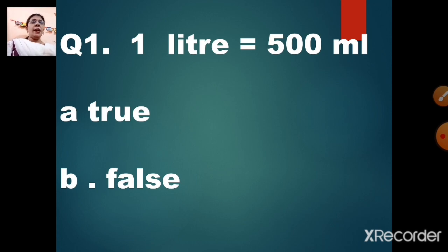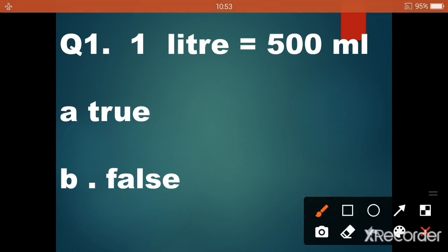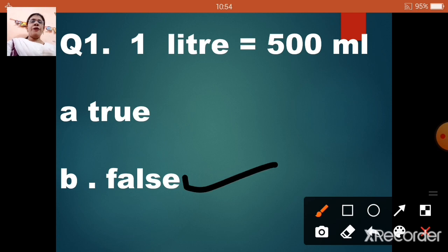Question number 1: 1 litre is equal to 500 ml. Option A: true. Option B: false. Now children, 1 litre is equal to how much ml? 1000. Correct. But the statement says 500 ml, so our correct answer is option B, false. 1 litre is equal to 1000 ml, not 500 ml.